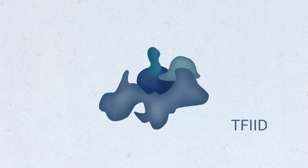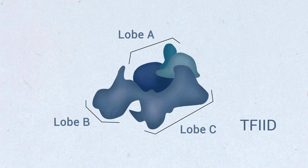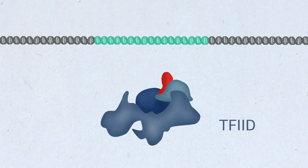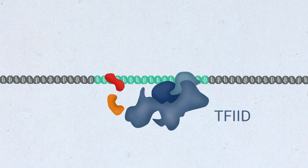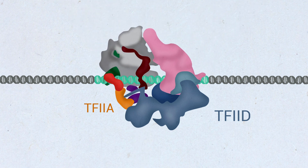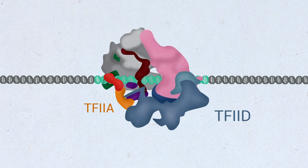TF2D is a highly flexible tri-lobed complex composed of TATA binding protein and 13 TBP-associated factors, with six of those TAFs present in two copies. Together, TBP and the TAF subunits of TF2D, with the assistance of TF2A, interact directly with promoter DNA, forming a platform for the assembly of the rest of the PIC.